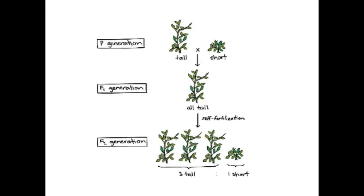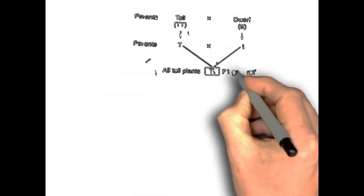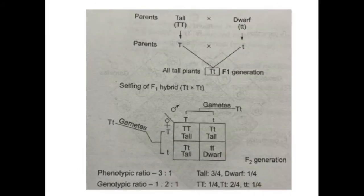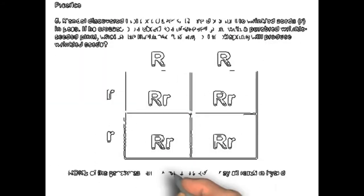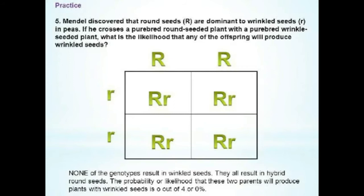In case 2, pure tall plants (TT) were crossed with dwarf plants (tt), and the progenies of F1 and F2 generations were obtained. In case 3, plants grown from pure round seeds (RR) were crossed with plants grown from pure wrinkled seeds (rr), and again the genotypic ratio was 1:2:1 while the phenotypic ratio was 3:1. These results are given in the Punnett square boxes on page number 31. In all three cases the monohybrid ratios are the same: phenotypic ratio 3:1 and genotypic ratio 1:2:1.